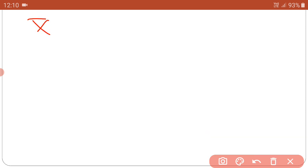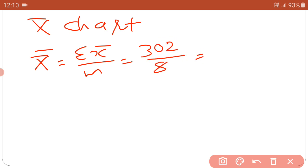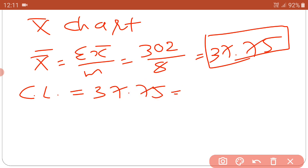First of all you find three limit for X bar chart. For the X bar chart, double X bar is equal to formula sigma X bar upon n. And here the total of sigma X bar is 302, then divide by 8. So 37.75. 37.75 is the answer of double X bar. So here we write CL is equal to 37.75, because the formula is CL is equal to double X bar.